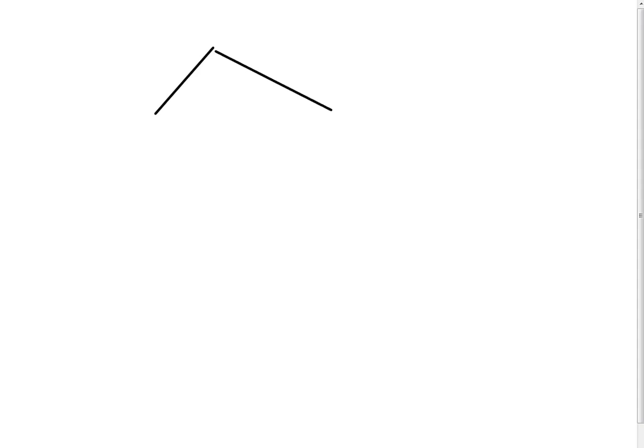One of the relationships that happens — I'm just going to draw this picture out — is when we have a right triangle, and we have the altitude drawn to the hypotenuse on that right triangle. An altitude is drawn from a vertex perpendicular to the opposite side. What happens here is there are really three triangles: the large one and then the two smaller ones, and all of them are similar.